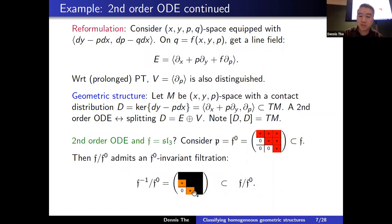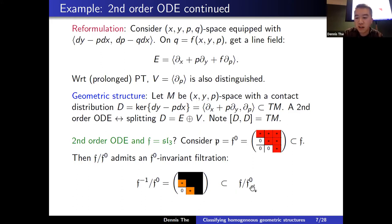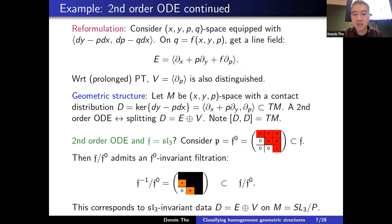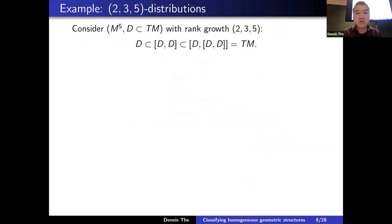On this space, which models the tangent space at the identity of the quotient f/f₀, we get f₀-invariant data. This induces f-invariant data on the corresponding homogeneous space. From things at an algebraic level we get invariant data on the manifold.